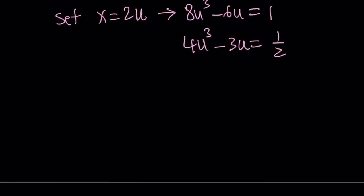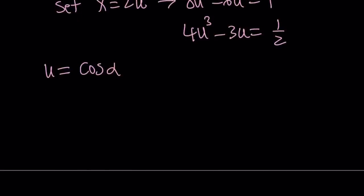And you're going to get something super duper nice, because this looks like cos(3α). What do I mean by that? I mean, if you set u = cos(α), make sure u is between -1 and positive 1 inclusive. So we have to make sure of that, but you're going to get the following. 4cos³(α) - 3cos(α) = 1/2, and the left-hand side of this equation is equivalent to cos(3α). Isn't that cool?